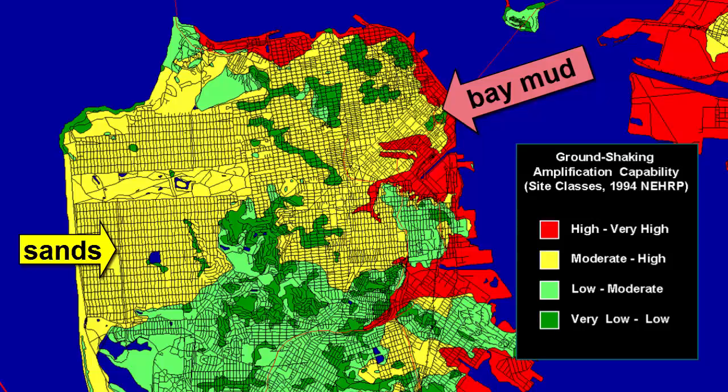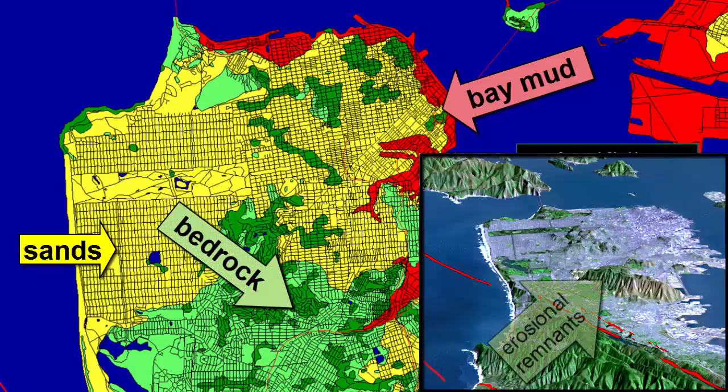Sand, shown in yellow, represents a moderate to high hazard for ground shaking in an earthquake. The only thing worse is mud, shown in red, which greatly amplifies ground shaking and turns to jello during an earthquake. Structures built on bay mud and sand suffer much worse damage than those built on solid bedrock during an earthquake. The solid bedrock is found in the erosional remnants — the hills scattered across the city — though those areas are also being actively eroded and landslides are a risk there too. No place is risk-free.